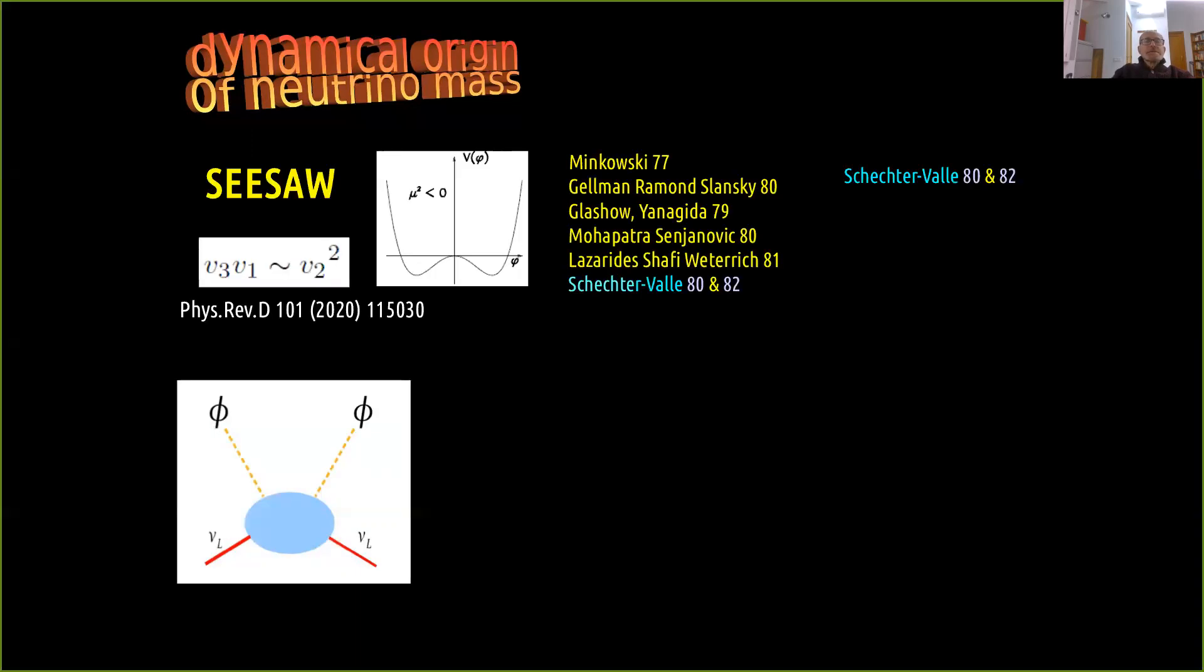But this is as far as one can go with this purely generic statement. Anything further requires a UV completion, and perhaps the most popular UV completion is the seesaw. And from my point of view, its most important feature is the fact that it brings in the possibility of a dynamical understanding of the smallness of neutrino mass, just by minimizing the Higgs potential. And in fact, the extra expectation values associated to neutrinos may actually hold the key to the understanding of the stability of the electroweak vacuum.